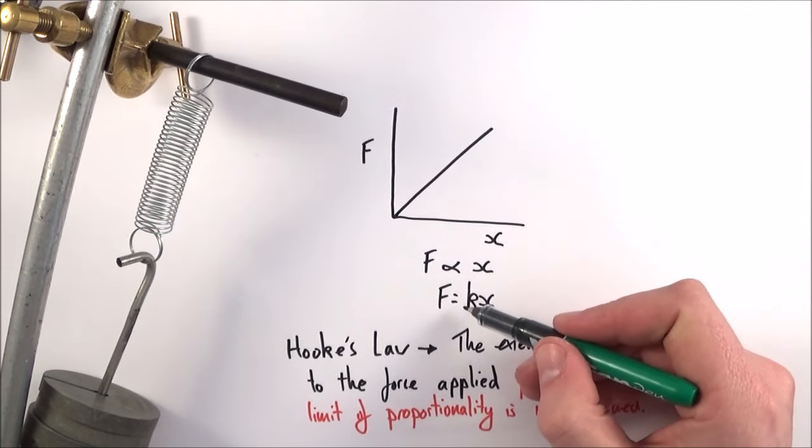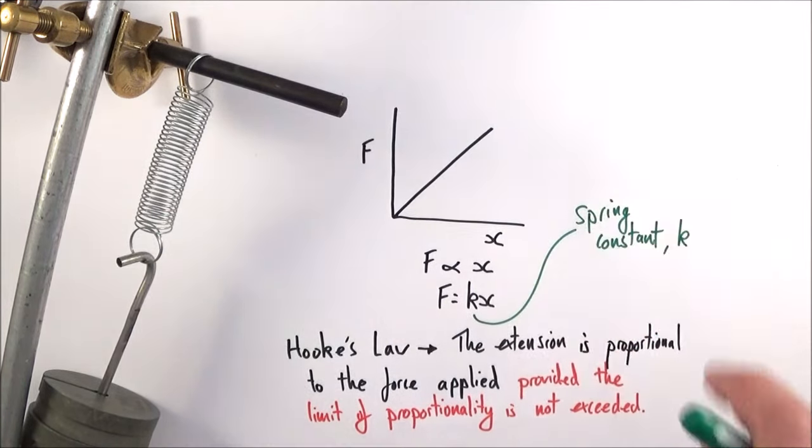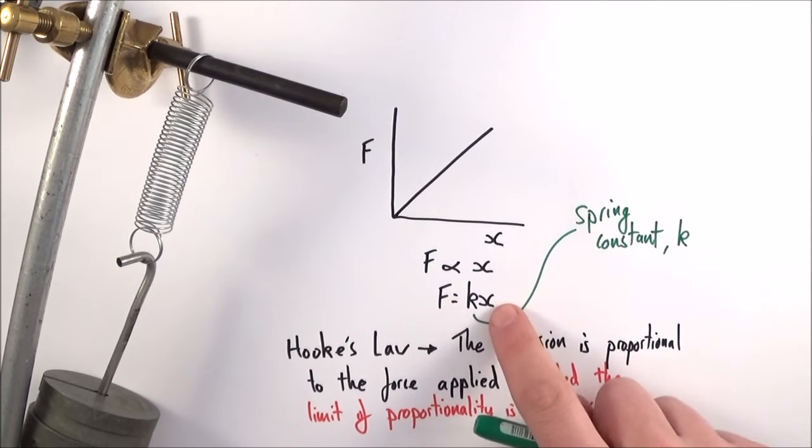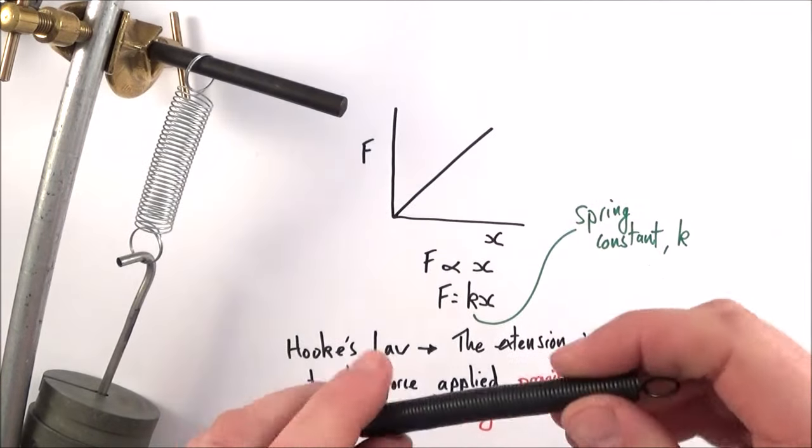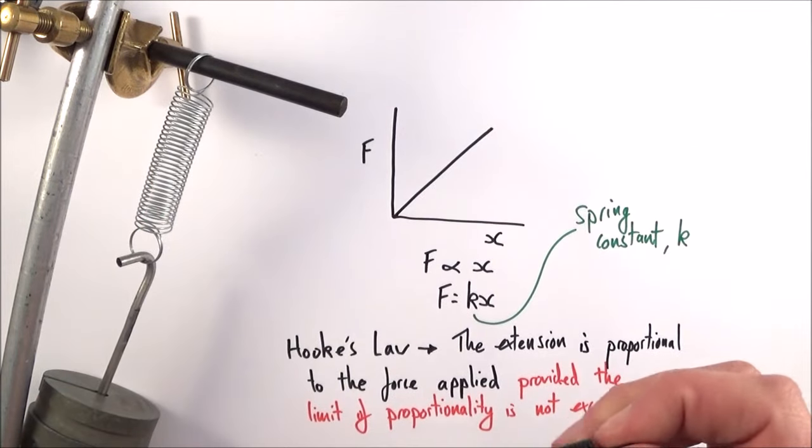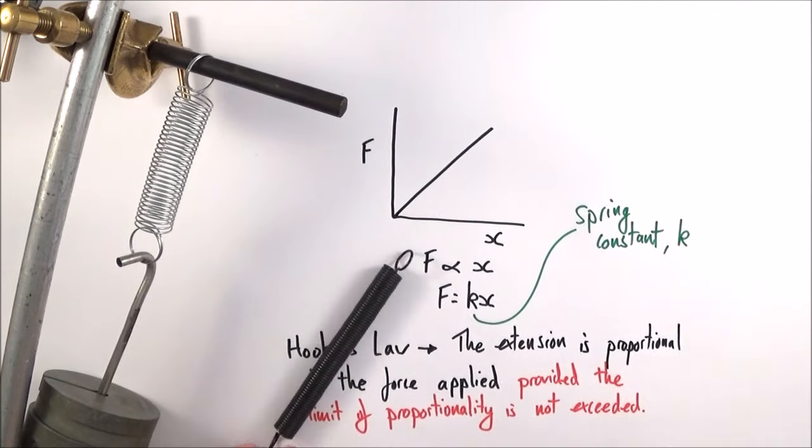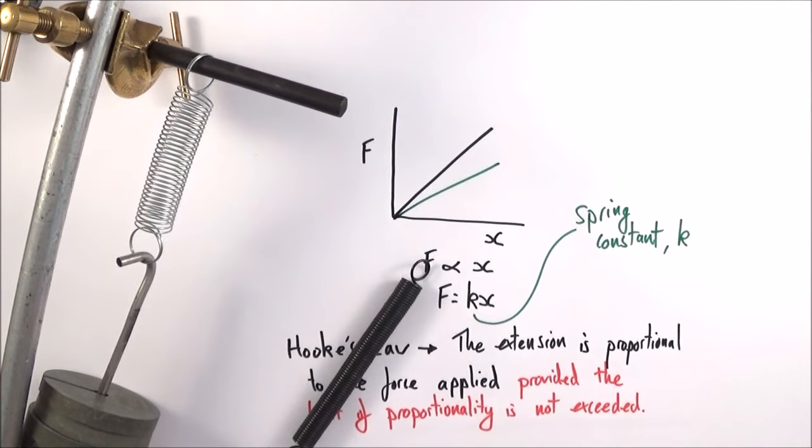This spring constant tells us how much a spring or piece of material will extend when a certain force is applied. We find that we have different sorts of springs. This one here might be quite stiff compared to this one which is fairly lazy. Different springs have their own spring constants, so you might apply the same force and get a different extension.